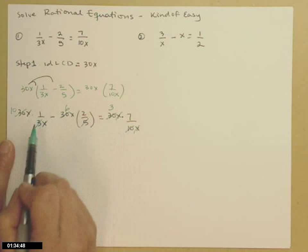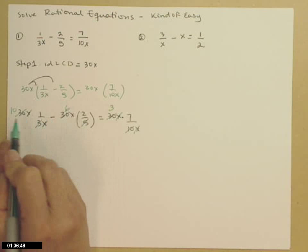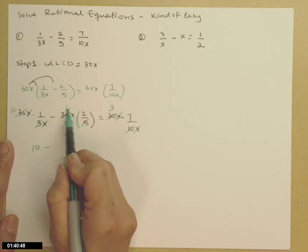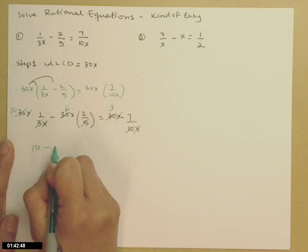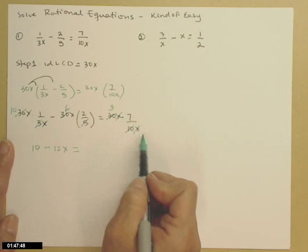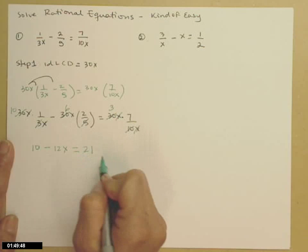Gathering up everything that's left, my first term is just a 10. 10 times 1 is still just 10. Next term, I have a 6 times an x times a 2. So that's going to be minus 12x equals, so I have a 3 times a 7.